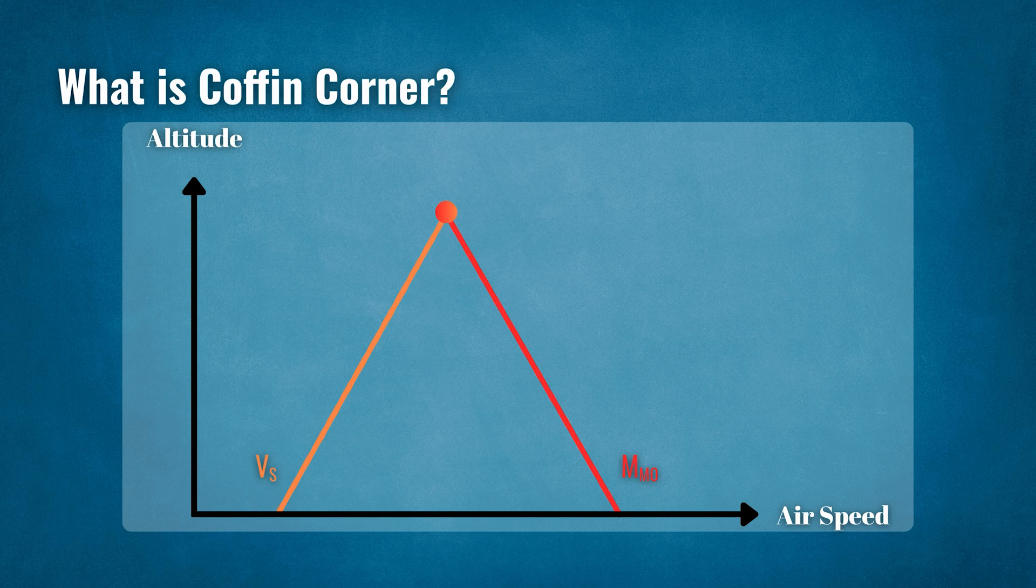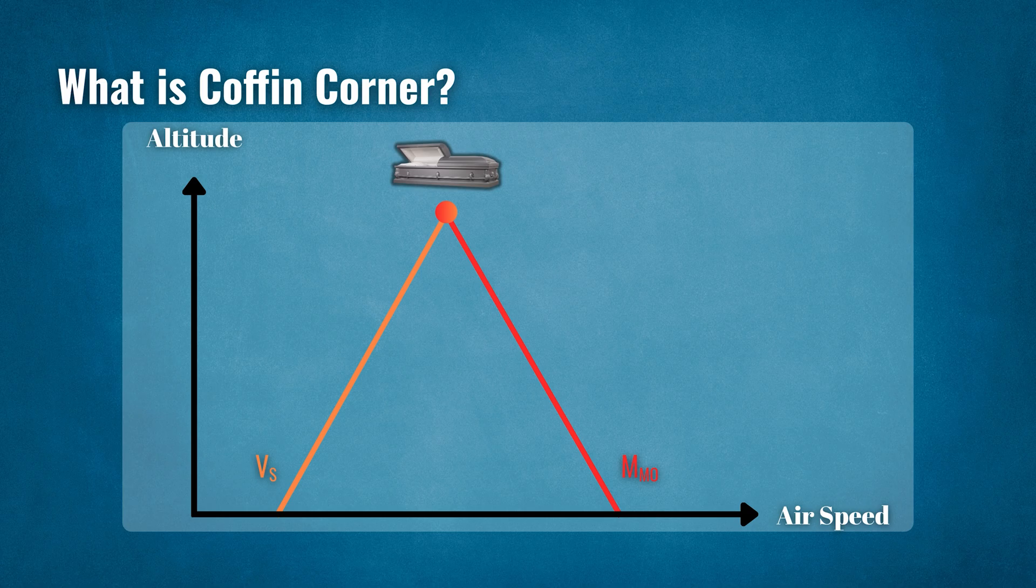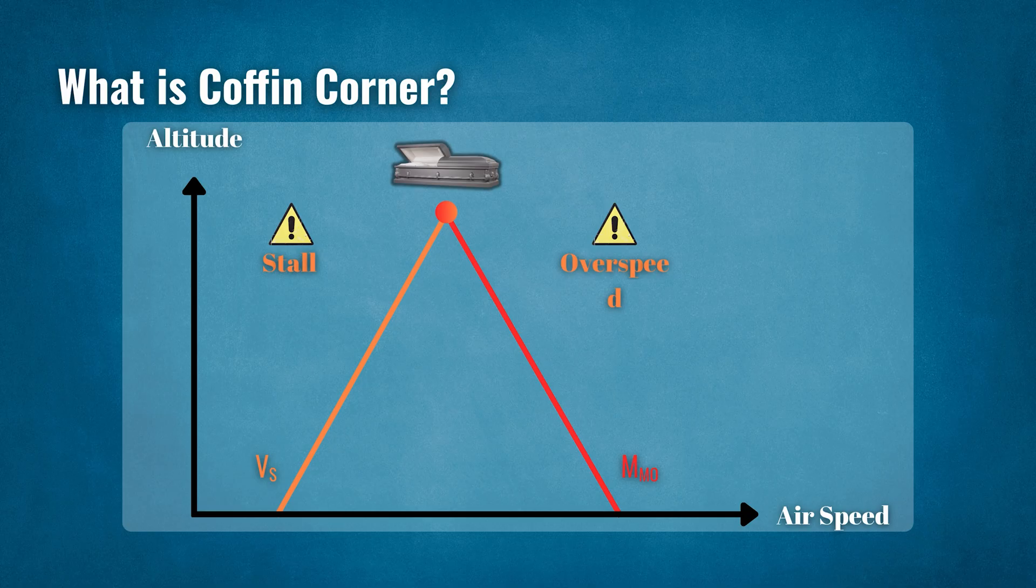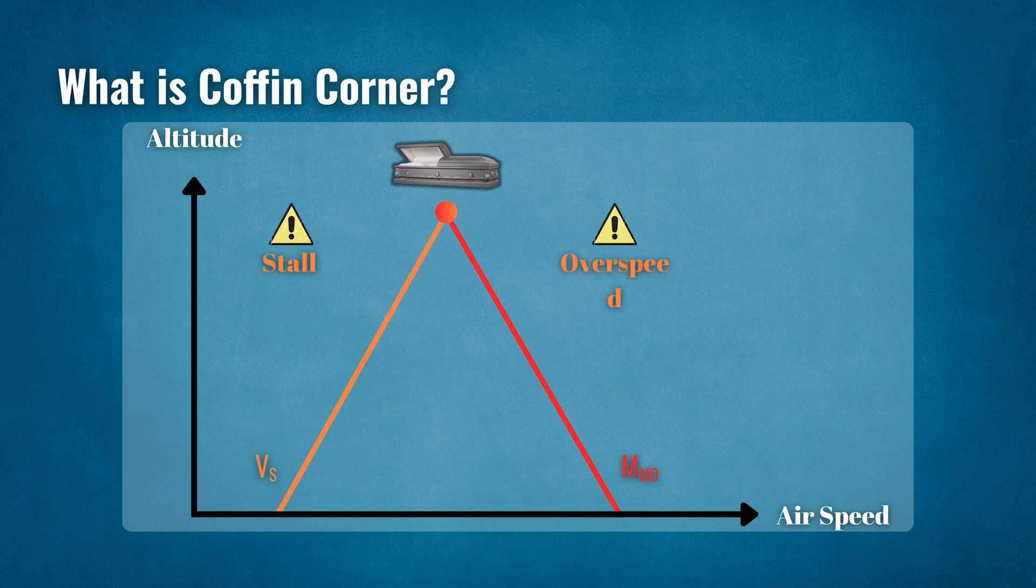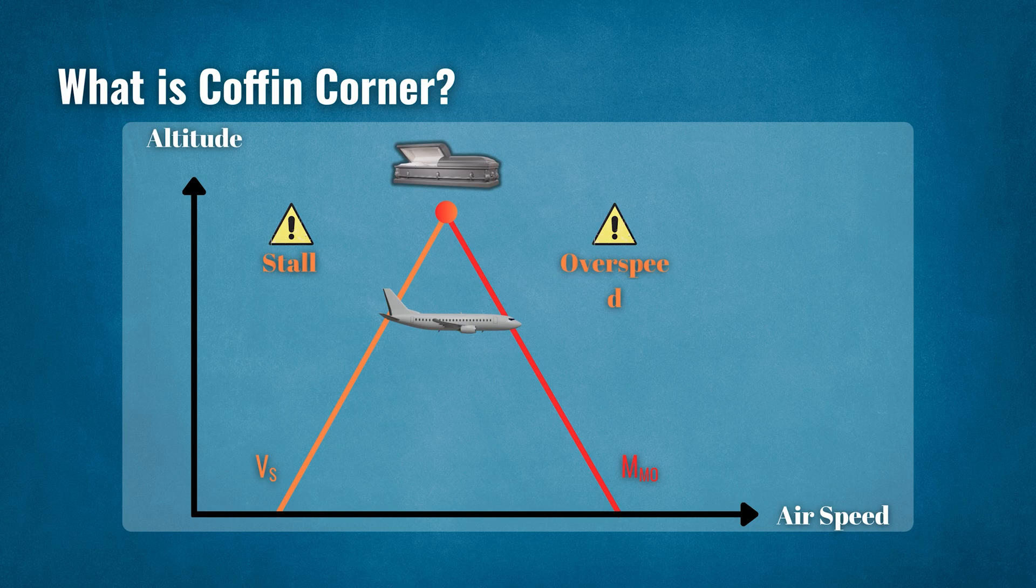This happens at very high altitudes. Essentially, the term coffin corner identifies the upper limits of an aircraft's operational envelope when flying at high altitudes. These limits are also referred to as the aerodynamic ceiling and are where stall and overspeed meet. Since this particular type of aerodynamic ceiling is located at very high altitudes, it is encountered by jet aircraft pilots rather than pilots of small general aviation aircraft.